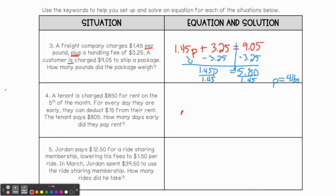For these next two, I'm simply going to help you set them up. I'm going to let you solve these on your own because I believe you can. A tenant is charged $850 for rent on the fifth of the month. For every day they are early, they can deduct $15 from their rent. The tenant pays $805. How many days early did they pay rent? So I know deduct is going to be subtract. So we're going to be subtracting $15 from their rent. Now it does say for every day, so that means it's not just minus $15. It's $15 per day. So that means we're going to be multiplying this by, let's call it R for rent. So minus $15R.